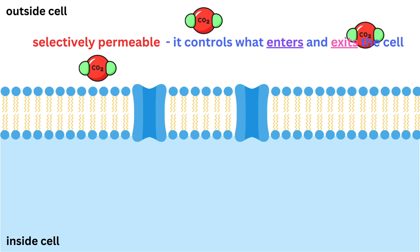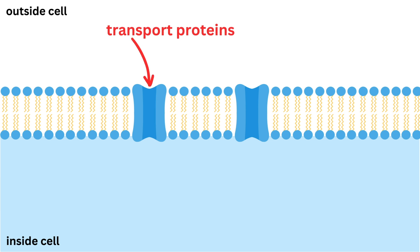How does the cell membrane do this? With the help of transport proteins. These proteins act like doors or channels that let certain molecules pass through. Some molecules can slide right through the membrane on their own, but others need a little help from these proteins to get in or out.